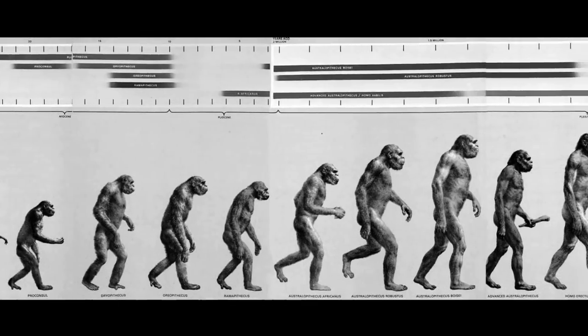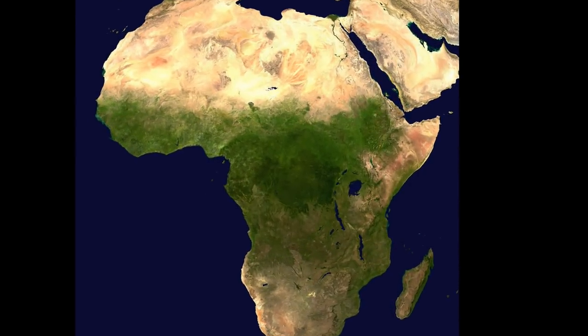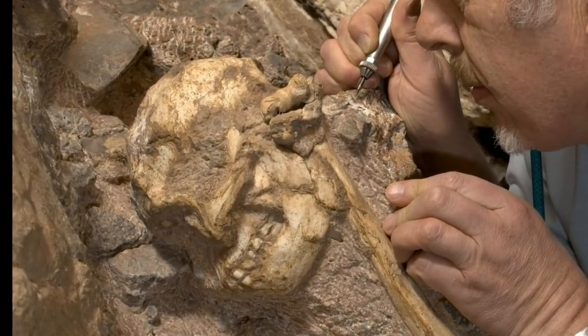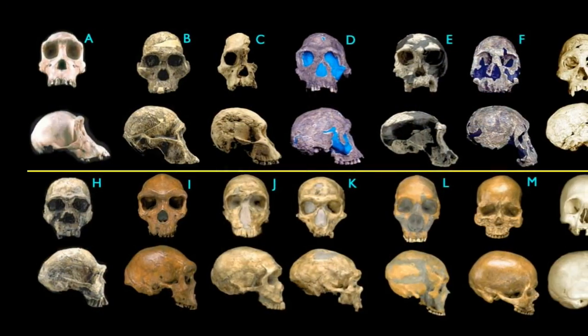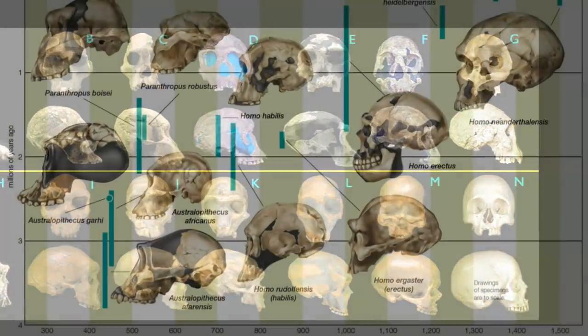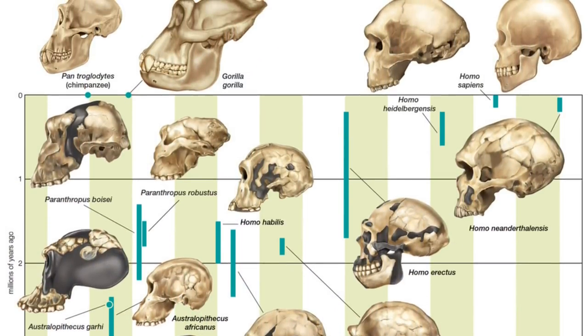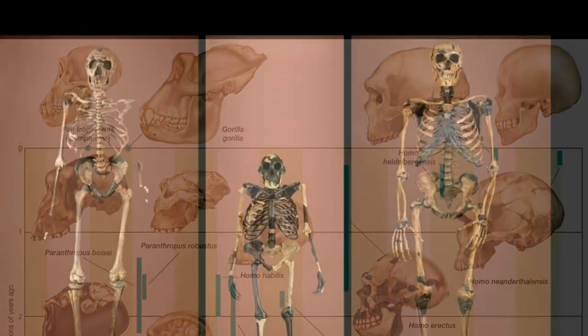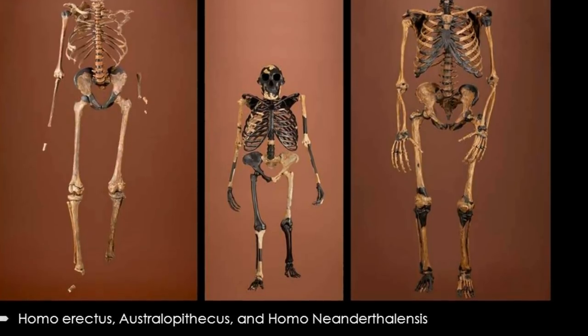That's also how the many transitional forms between early apes and modern humans were discovered. Darwin himself predicted that humans must have originated in Africa because of our similarities to chimpanzees and gorillas. Sure enough, paleontologists exploring Africa have since found numerous fossil species with physical characteristics between early apes and modern humans, all within the right range of dates — exactly what evolutionary theory predicted we should find.